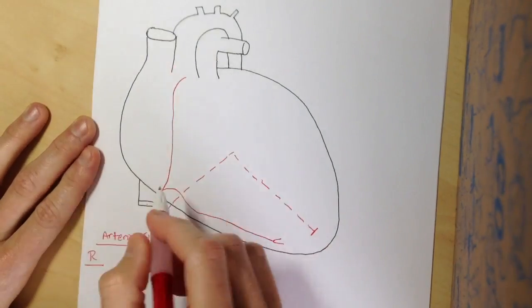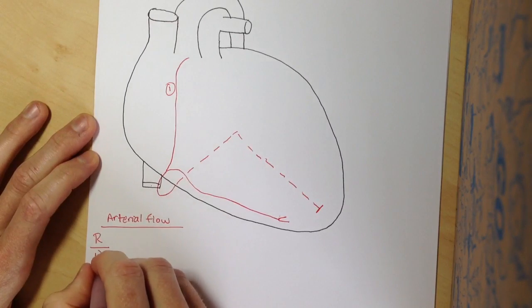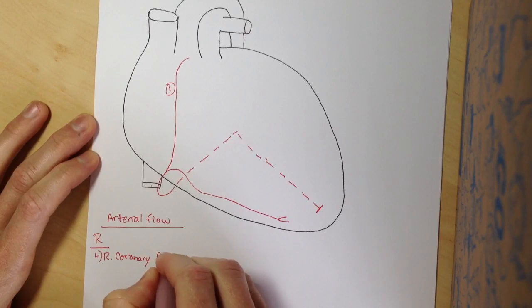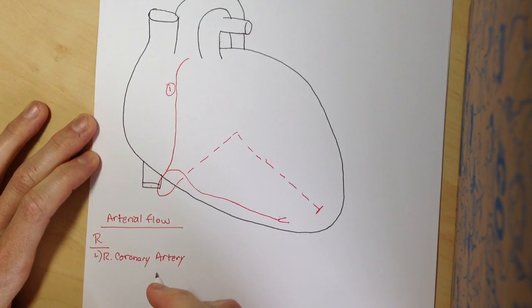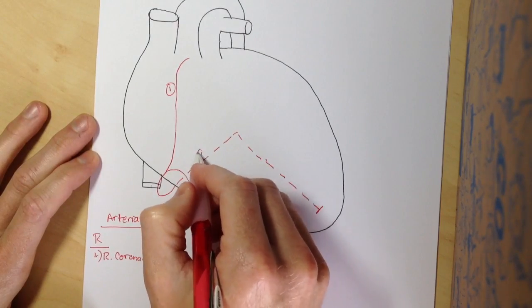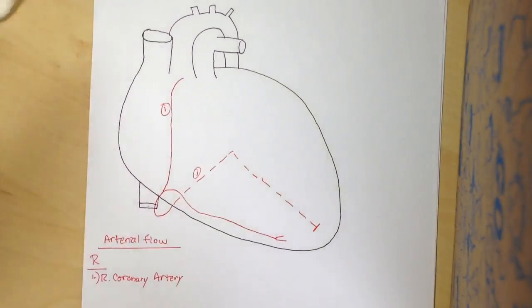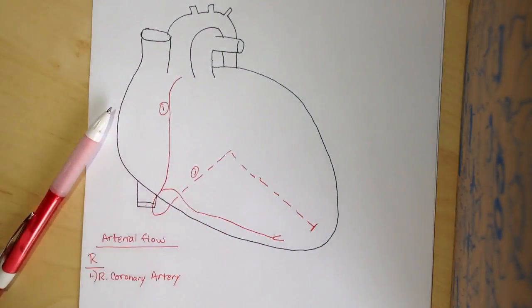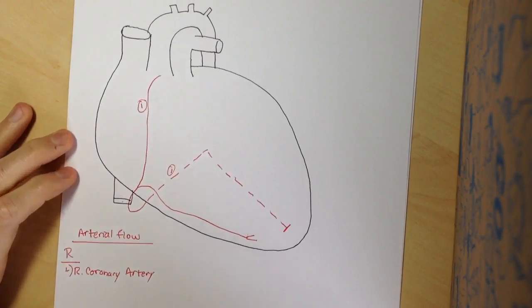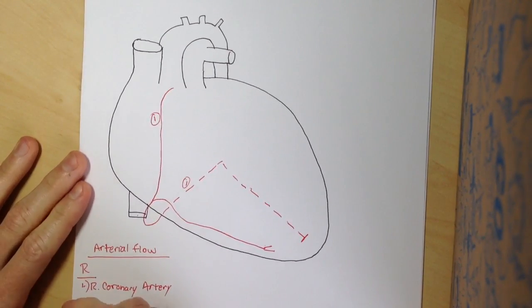On the right side, the first branch it gives off is going to be called the right coronary artery. The right coronary artery loops around back, and it doesn't really change names.